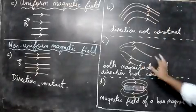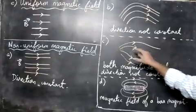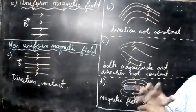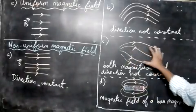See third one. In this case the magnitude—that means the closeness of lines—closeness of lines shows the magnitude, and direction is not constant.